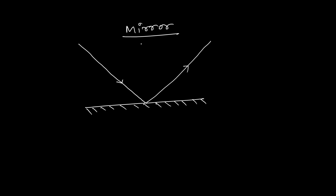At the point of reflection, if I draw a perpendicular or a normal, the angle created by the incident ray with respect to the normal is known as the angle of incidence, denoted as I. The angle created by the reflected ray with respect to the same normal is known as the angle of reflection. According to the laws of reflection, the angle of incidence is equal to the angle of reflection.